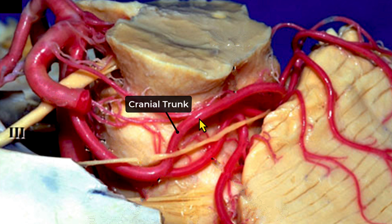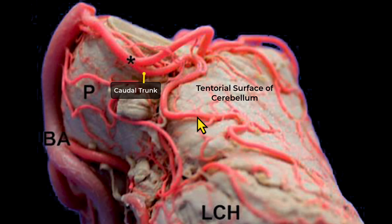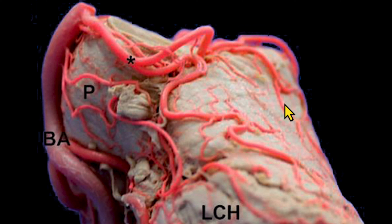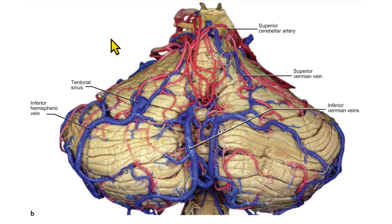The cranial trunk predominantly supplies the superior vermis and gives rise to perforators to the inferior colliculus of the midbrain. The caudal trunk predominantly supplies the tentorial surface of the cerebellar hemisphere. This is a specimen of the cerebellar hemisphere seen from the posterior aspect, showing the various branches of the superior cerebellar artery.